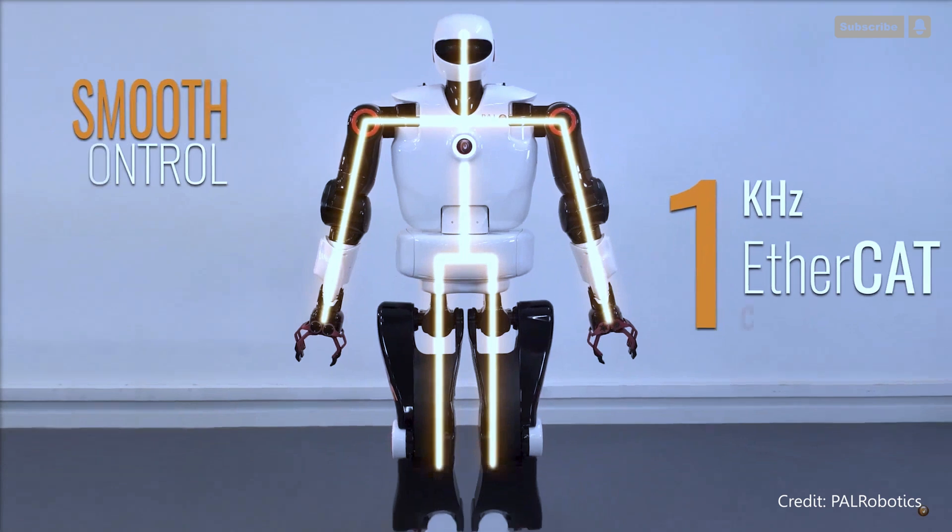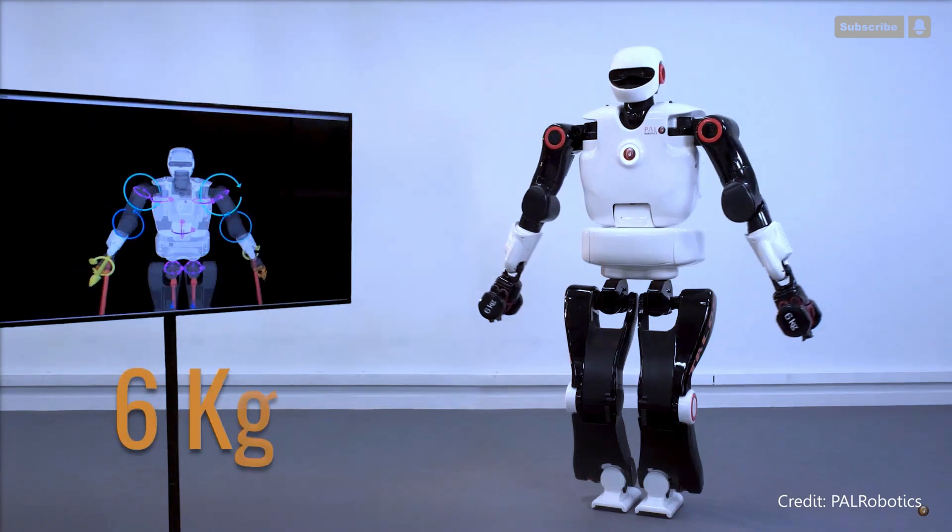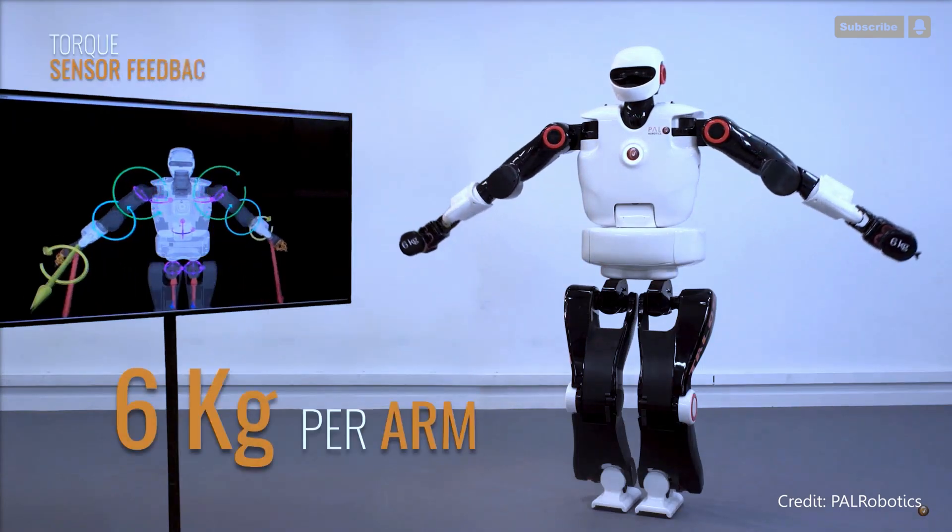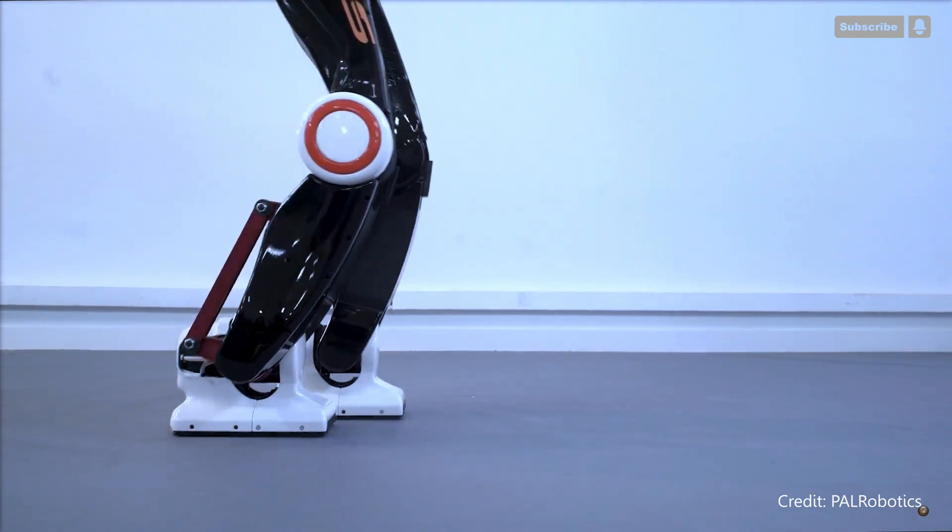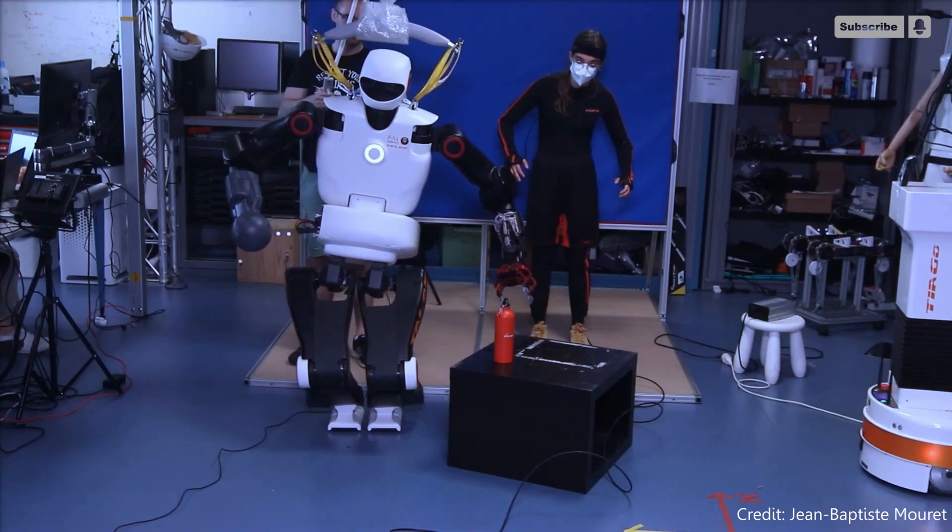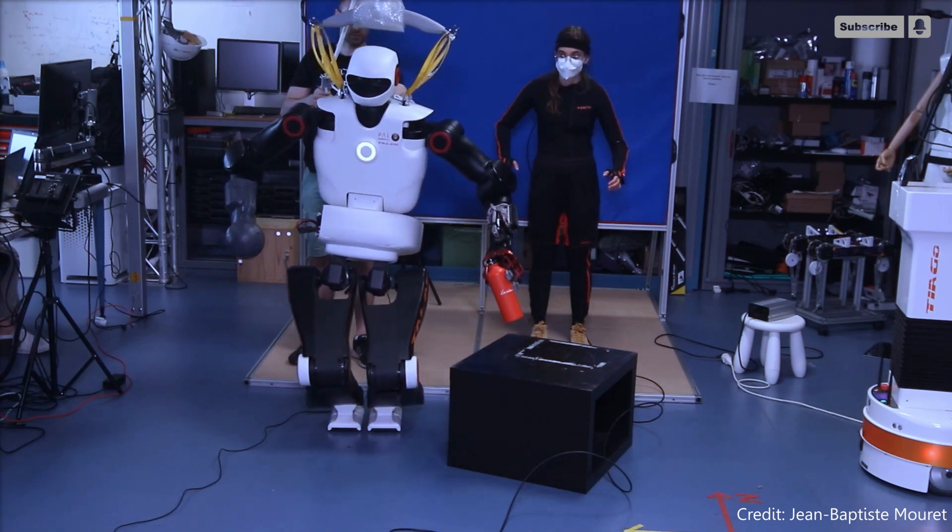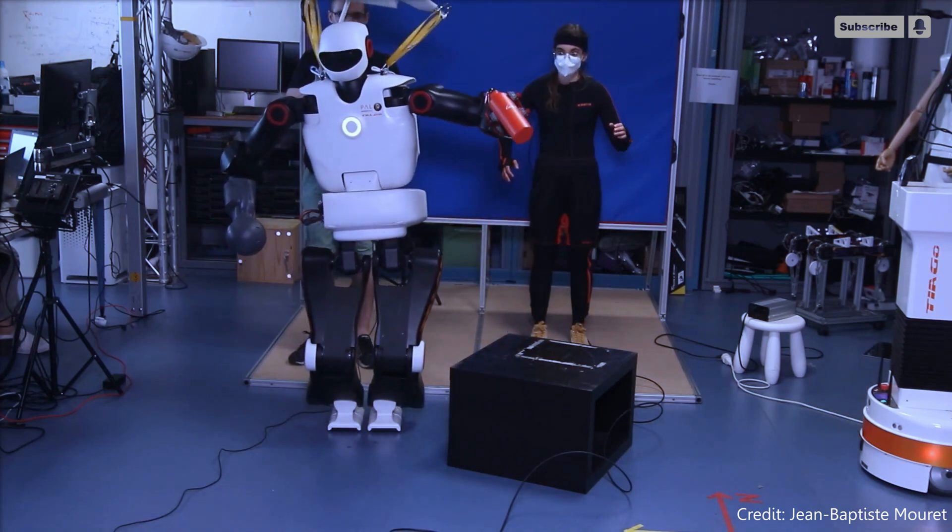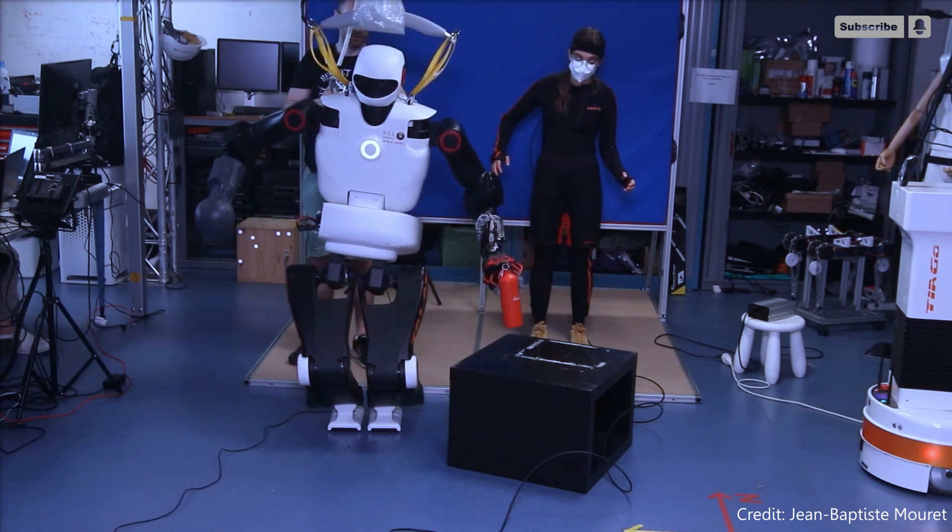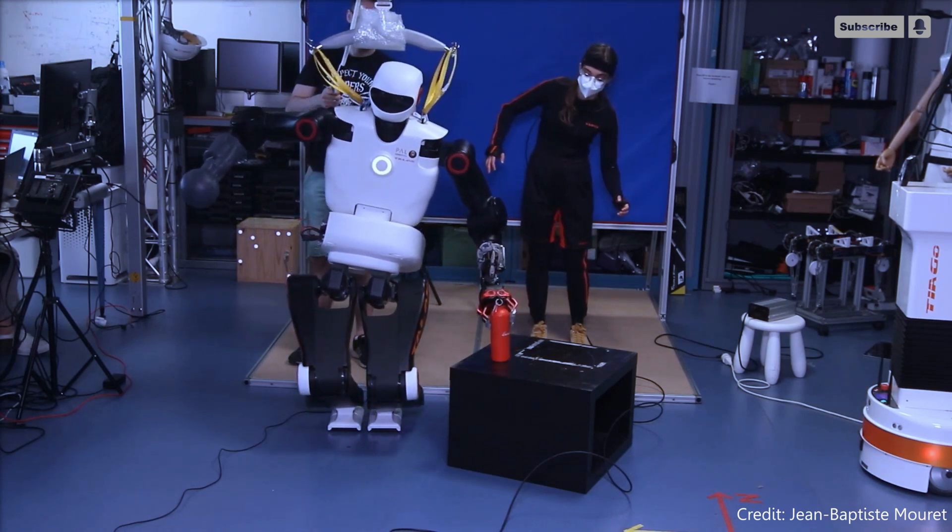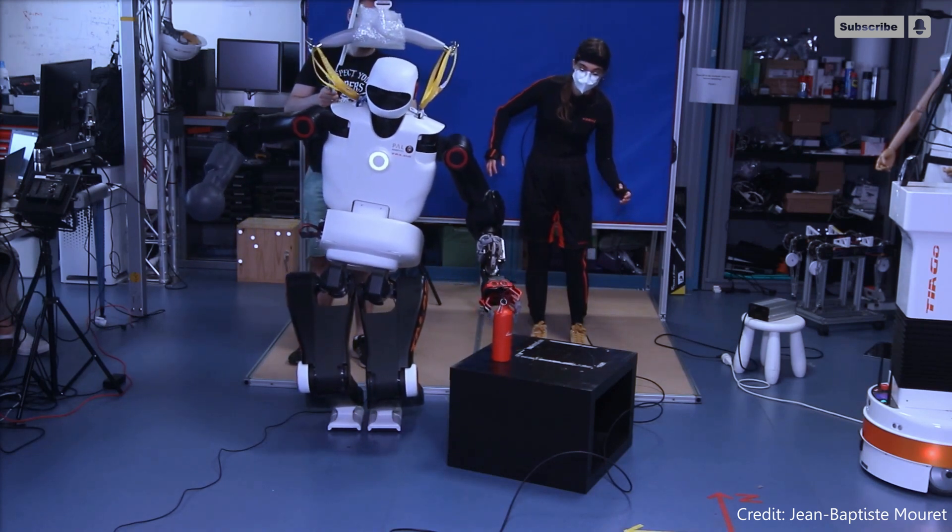The robot's damage reflex begins to function once it realizes that something in one of its legs has failed. With the robot's posture and the location of the wall as inputs, a neural network trained with 882,000 simulations has taught the robot its damage reflex maneuver. In a matter of milliseconds, the network outputs how likely a prospective wall contact will stabilize the robot.